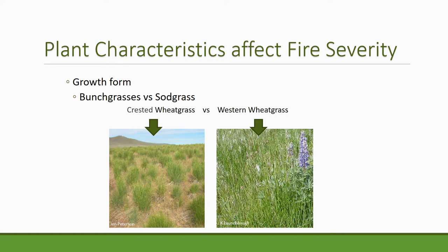Bunch grasses are more severely affected by fire than sod grasses. Crested wheatgrass, for example, is more severely affected because when fire gets into that bunch it can burn more slowly and build up heat that could kill the meristems. On the right, a strong stand of western wheatgrass allows fire to move through at a steady rate without enough bulk density to slow it down and create a lethal heat source.